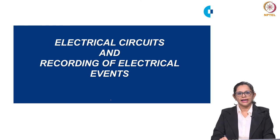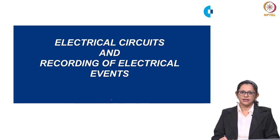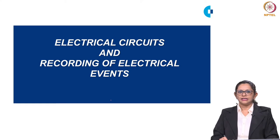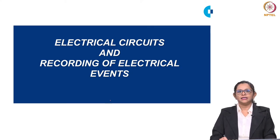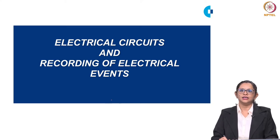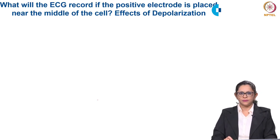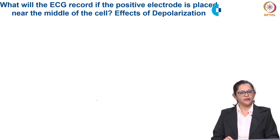To start with electrical circuits and recording of electrical events: the electrocardiogram is the record of the electrical events of the heart. These electrical events are mainly due to the depolarization and repolarization of the muscles of the heart — that is the atrium and the ventricles. When an electrode is placed on the surface of the body, the events in the heart will be recorded as an ECG.